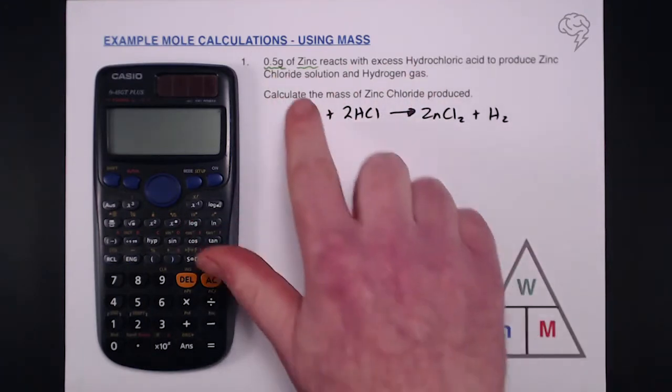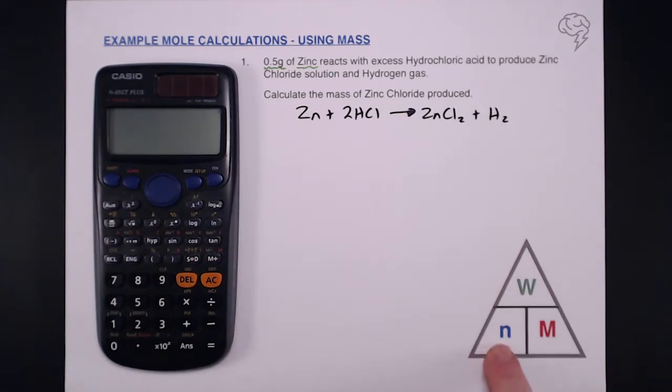Looking at the question, the only thing we can calculate is the number of moles of zinc because we have a mass and we've always got access to our molar mass. So step one is to find the number of moles of zinc.